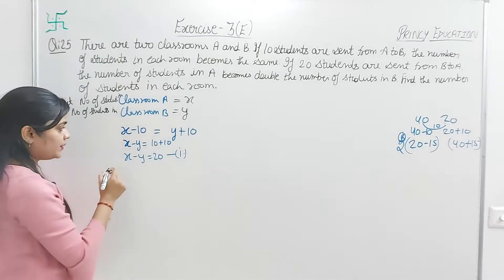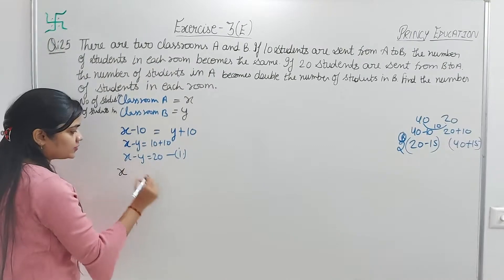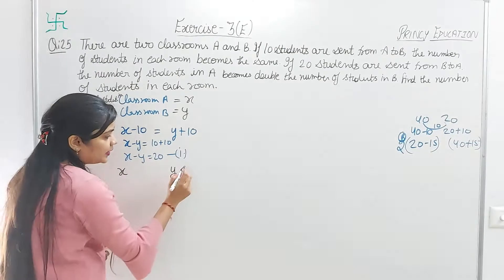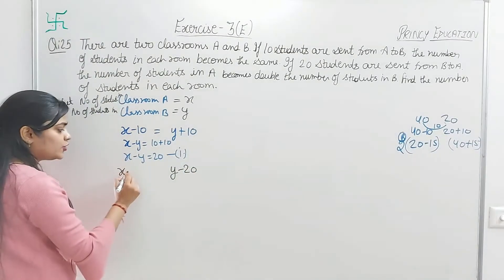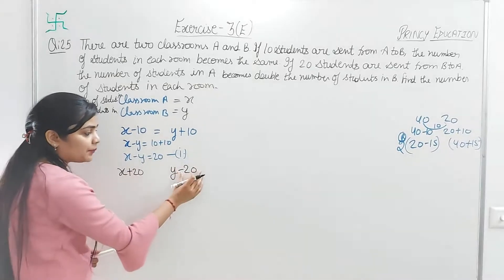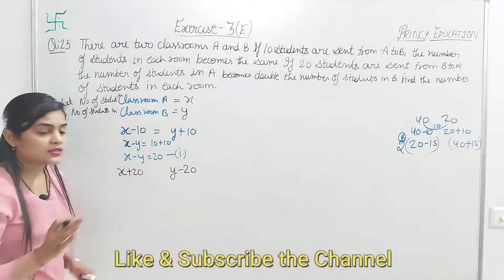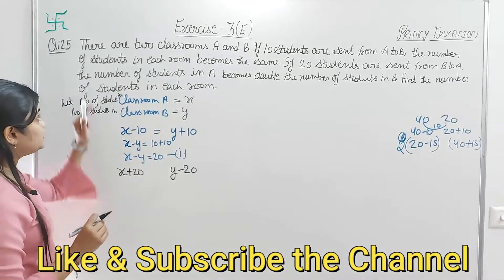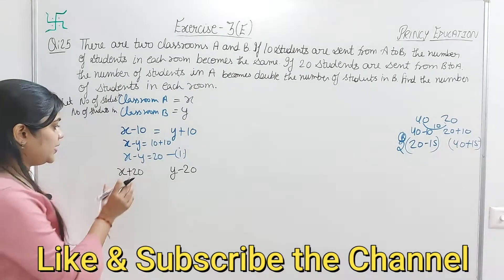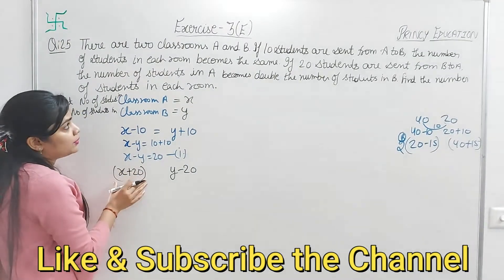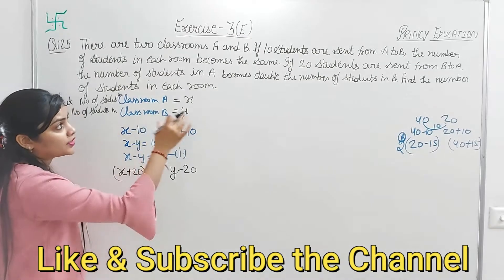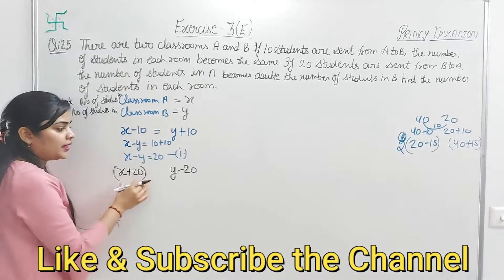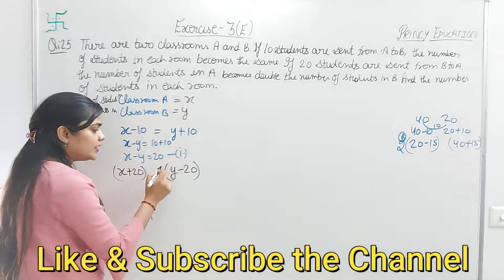For condition 2: if 20 students are sent from B to A, then A has x plus 20 and B has y minus 20. The number of students in A becomes double the number in B. So x plus 20 equals 2 times (y minus 20), which means x plus 20 equals 2y minus 40. This gives equation 2.